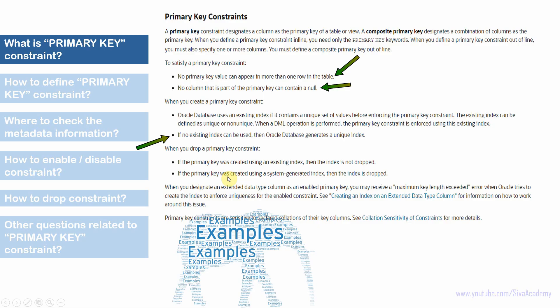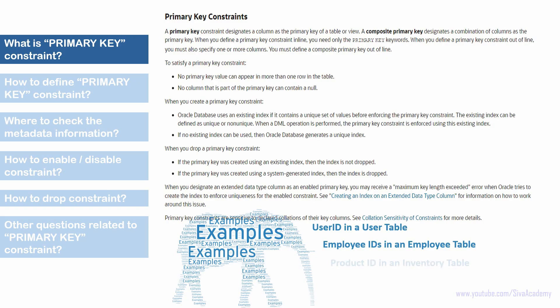Let's see a few examples where primary key columns are applicable in real time: user ID in a user table, employee ID in an employee table, product ID in an inventory table, and account numbers in a banking system. So wherever you want to enforce uniqueness, you can use the primary key constraint.